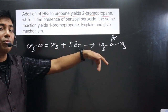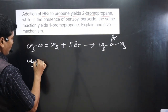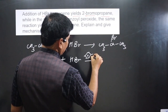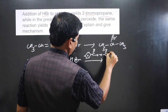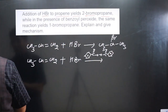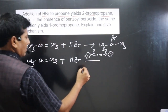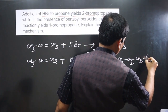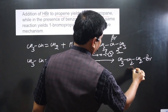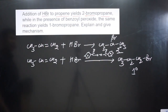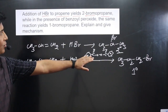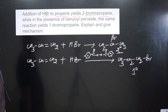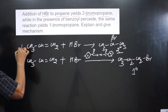If we use benzoyl peroxide, we get 1-bromopropane. The reaction is CH3-CH=CH2 plus HBr with benzoyl peroxide as reagent, giving CH3-CH2-CH2Br, which is 1-bromopropane — a primary alkyl halide. Without peroxide we get a secondary alkyl halide. The question asks us to explain and give the mechanism for why this change is happening.